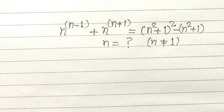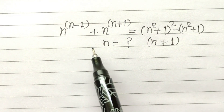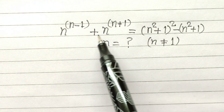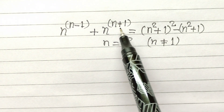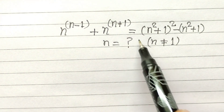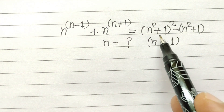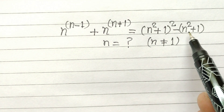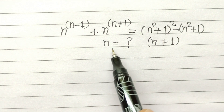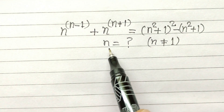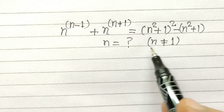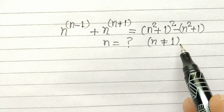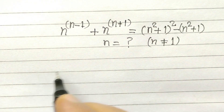Hi friends, welcome. Today we have a nice equation: n to the power n minus 1, plus n to the power n plus 1, is equal to n squared plus 1 whole square minus n squared plus 1. So we have to find out the value of n. The condition is n is not equal to 1. So let's start.